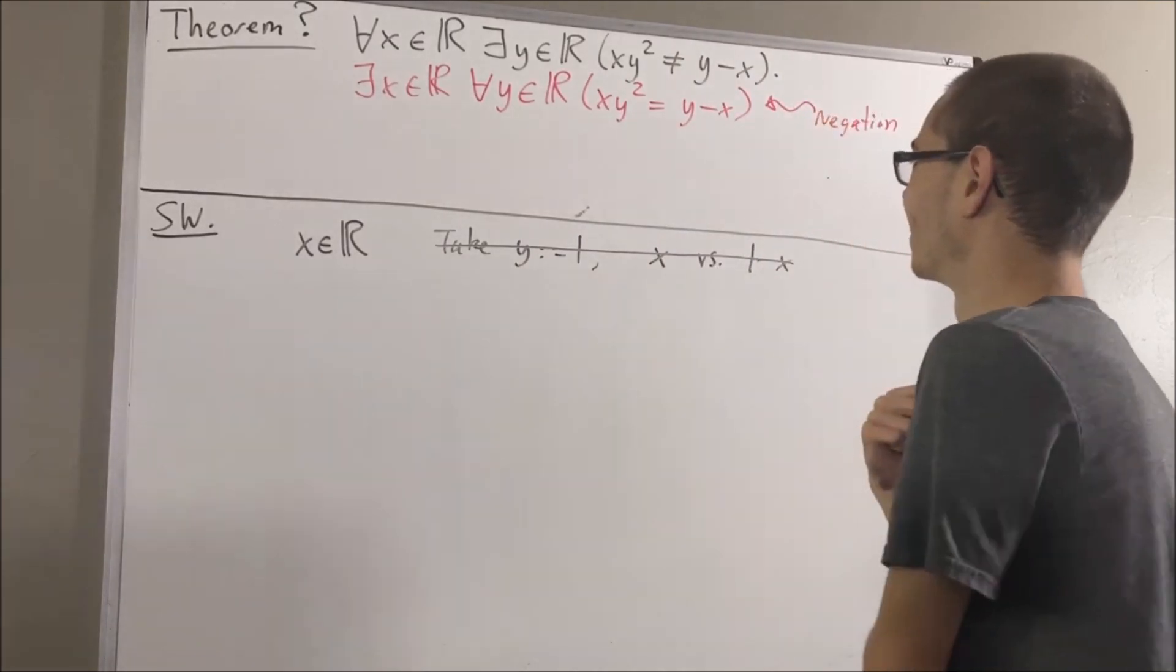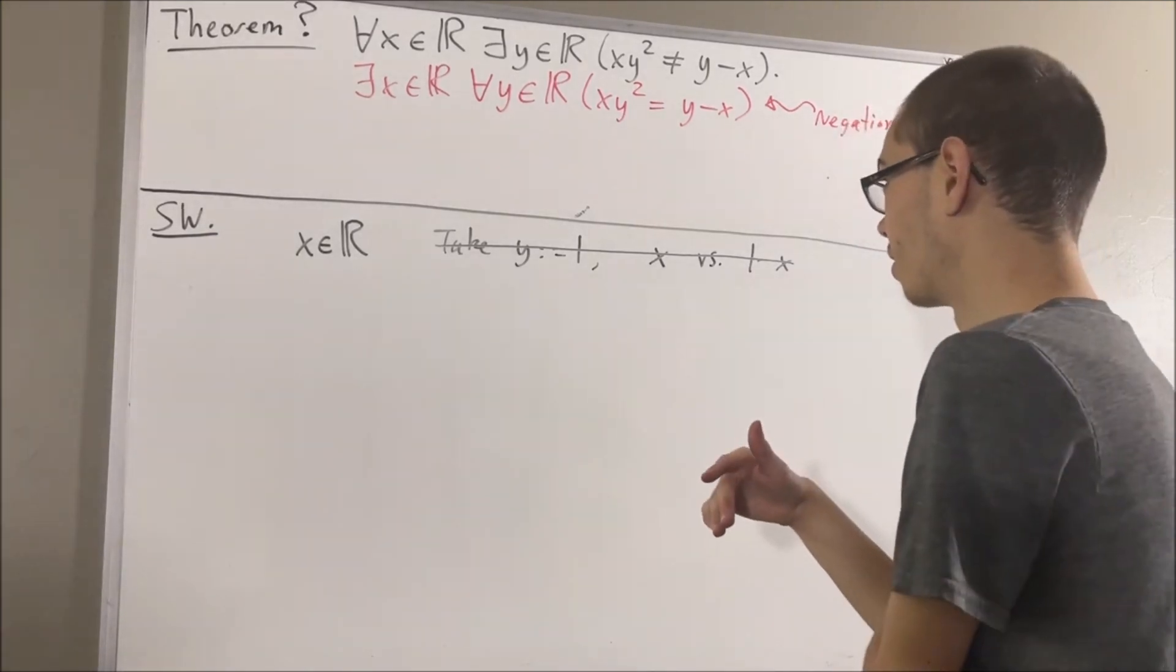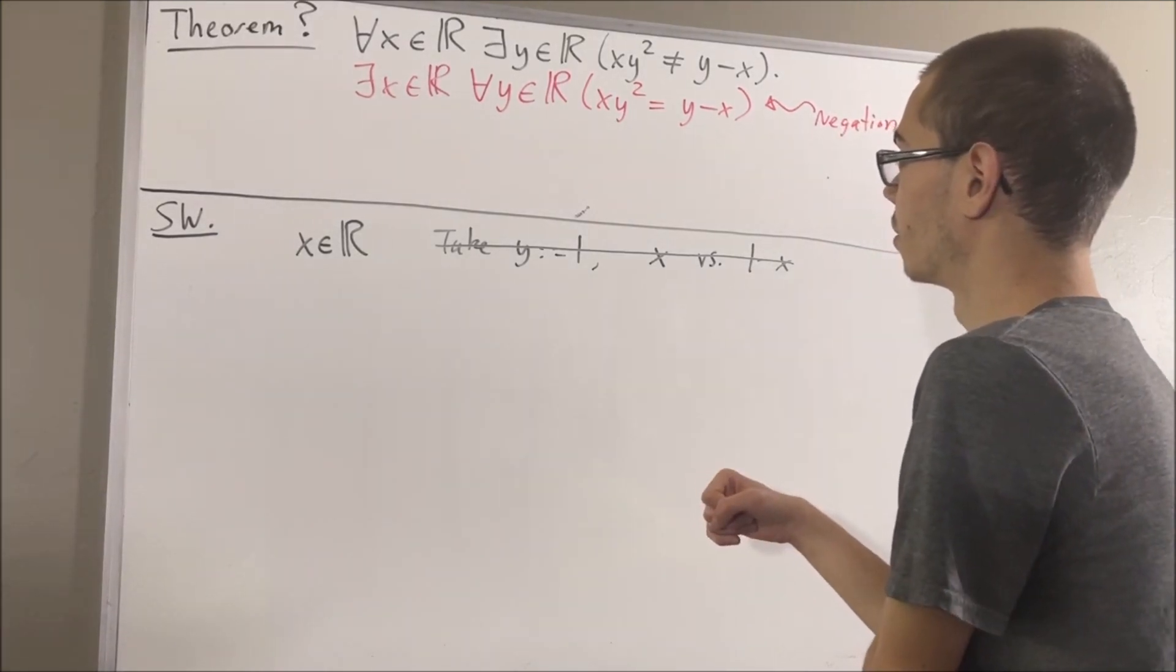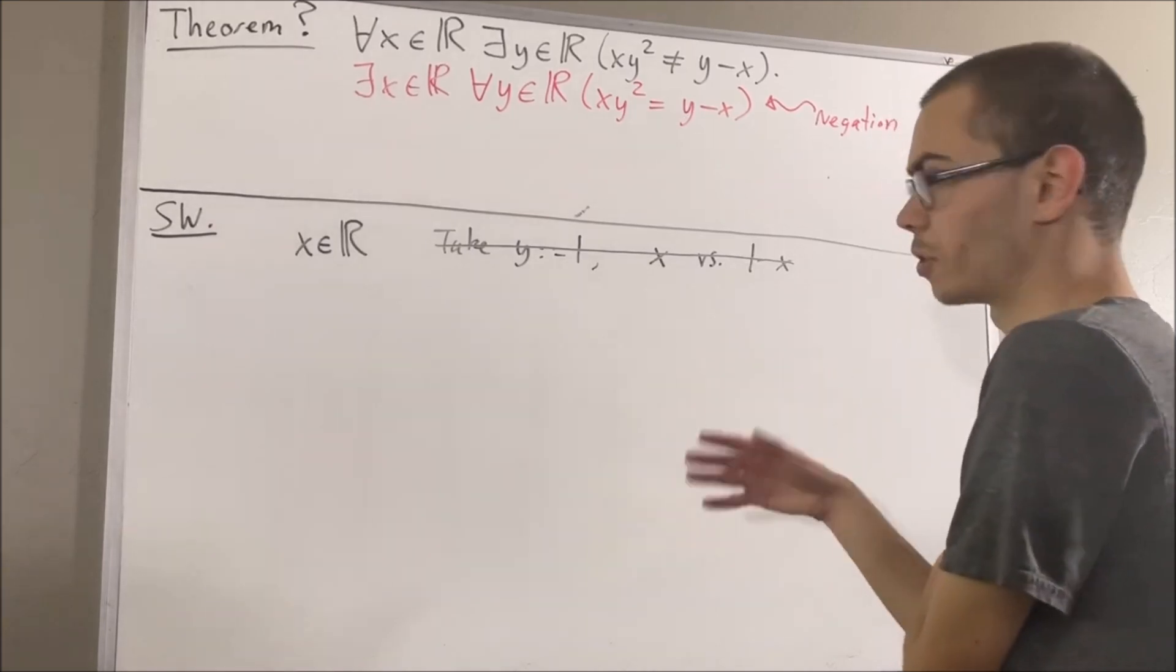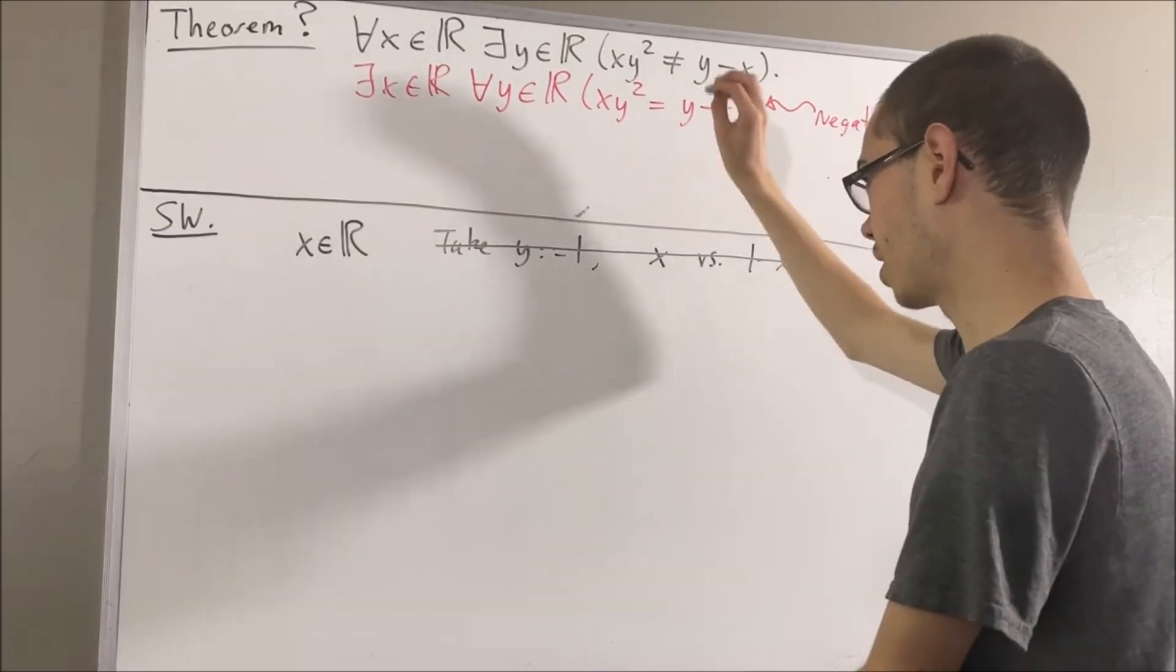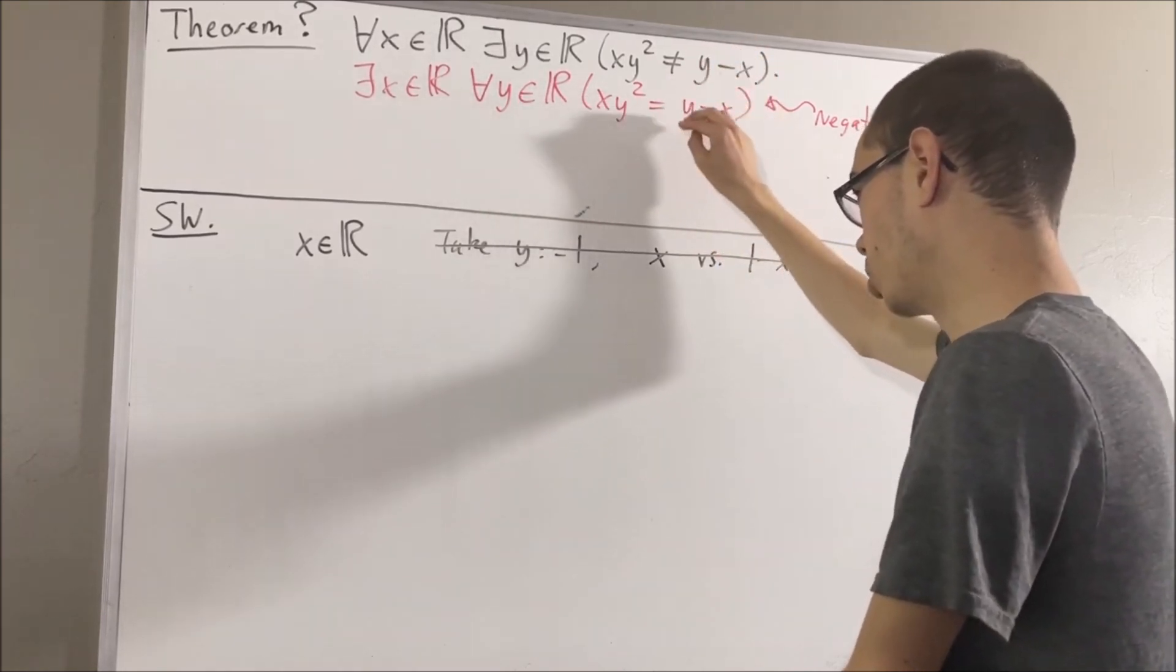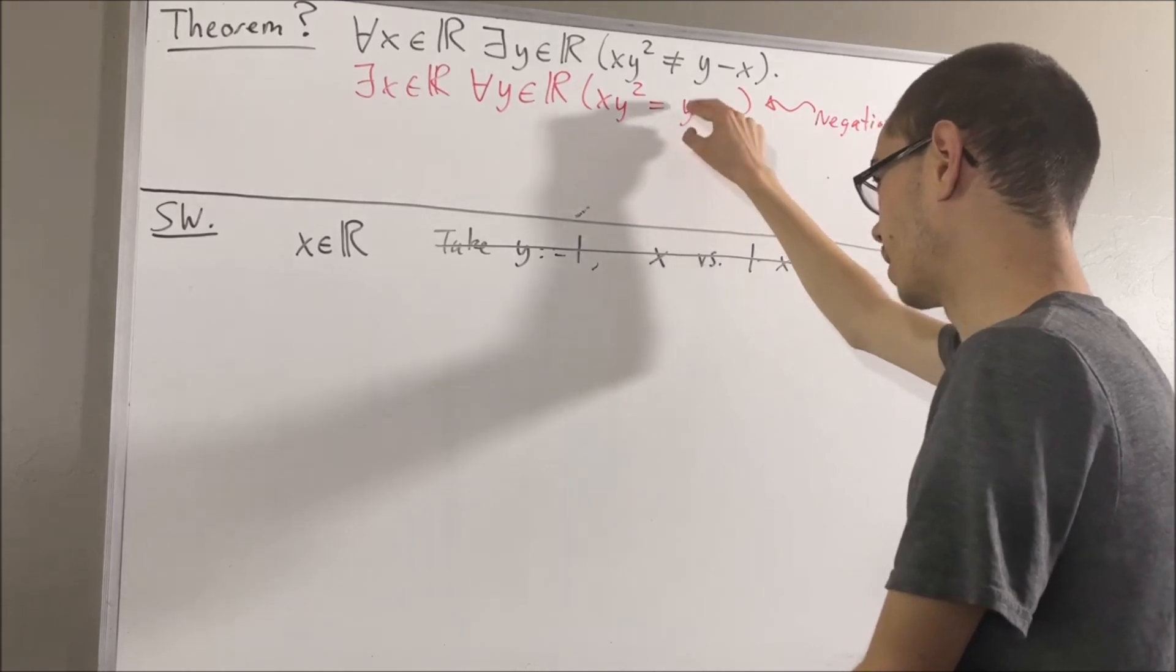So zero doesn't work. Wait, yeah, zero doesn't work. One doesn't work. Two doesn't work. Three doesn't work, right? I mean, I don't see anything working for this either, because how can a quadratic ever be identical to a linear if we aren't able to make this guy zero?